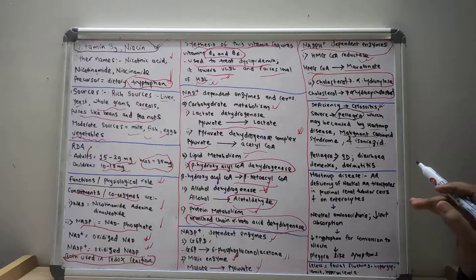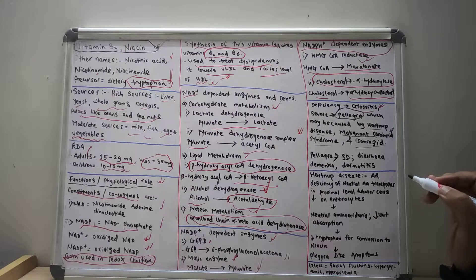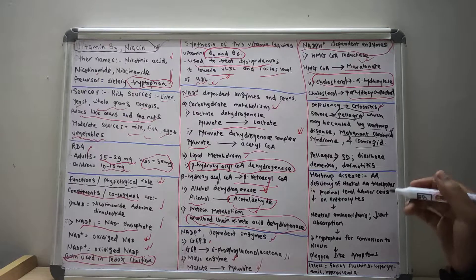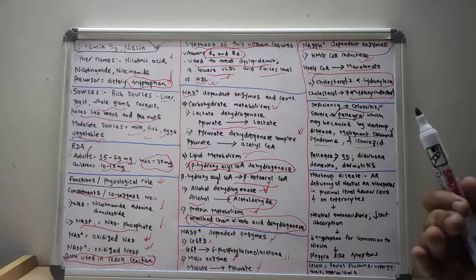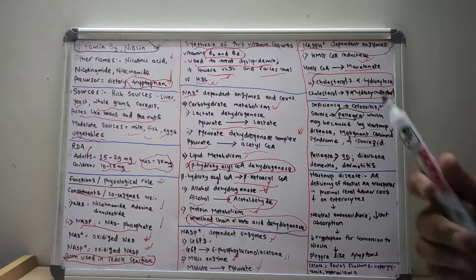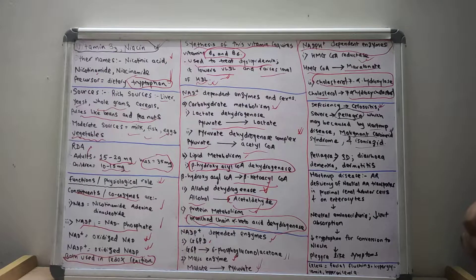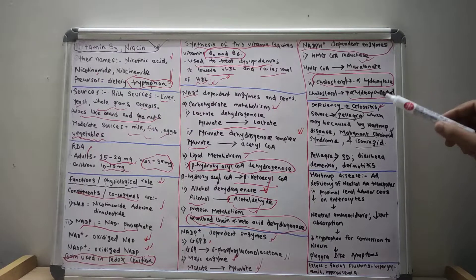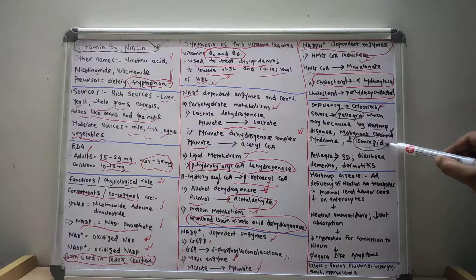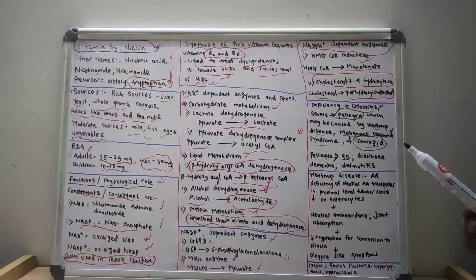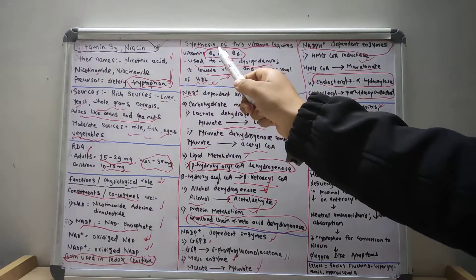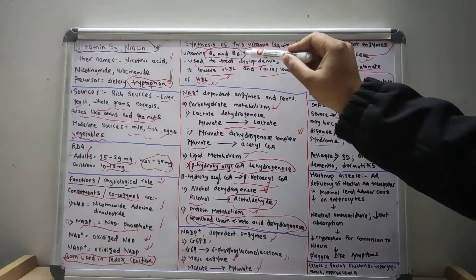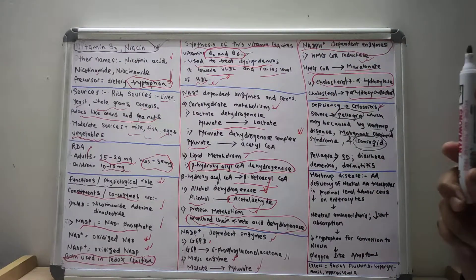In malignant carcinoid syndrome, there is increased tryptophan metabolism, so the precursor for vitamin B3 is less available in the body, leading to less production of vitamin B3. In the case of isoniazid, it reduces vitamin B6 levels in the body. Since vitamin B2 and vitamin B6 are required for synthesis of vitamin B3, deficiency of vitamin B6 leads to deficiency of vitamin B3.